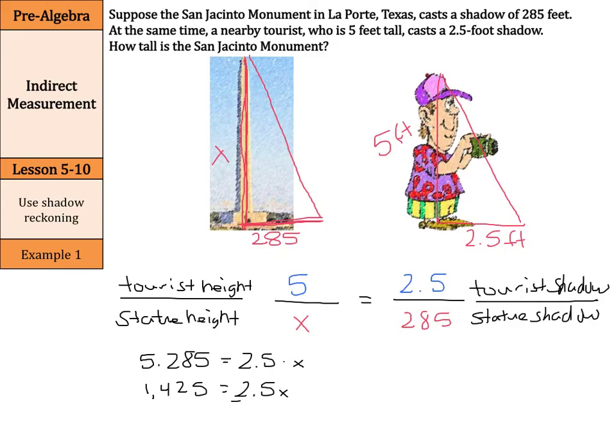In order to solve the proportion, divide by two and a half on both sides, and x equals 570 feet. And so, this is a method called shadow reckoning.